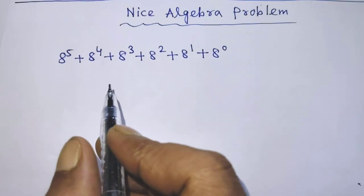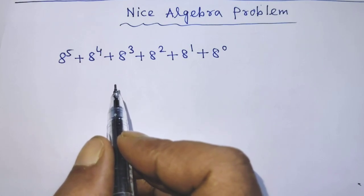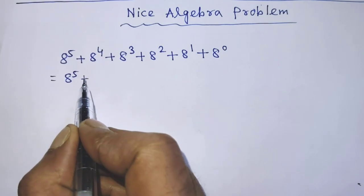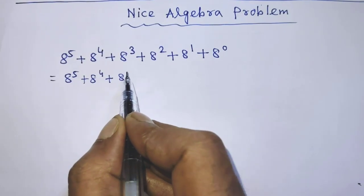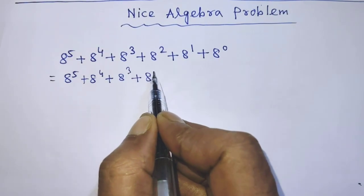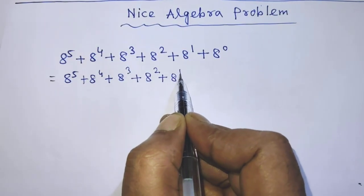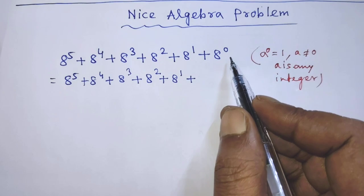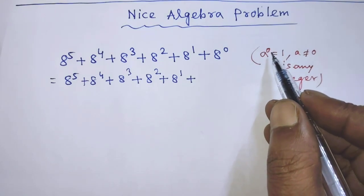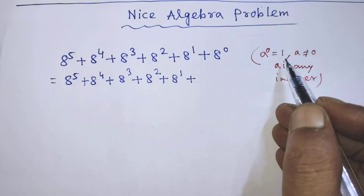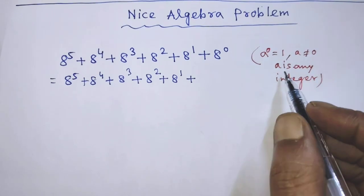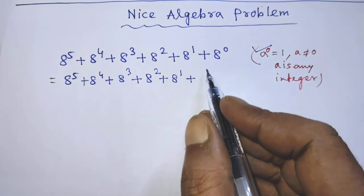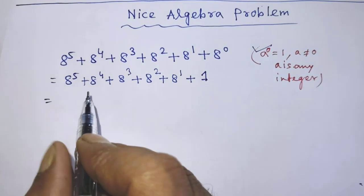In the first step of the solution, we have: 8 to the power 5 plus 8 to the power 4 plus 8 to the power 3 plus 8 to the power 2 plus 8 to the power 1 plus 8 to the power 0. To simplify the last term, we apply the formula: a to the power 0 equals 1, where a is not equal to 0 and a is any integer. So according to this formula, 8 to the power 0 equals 1.